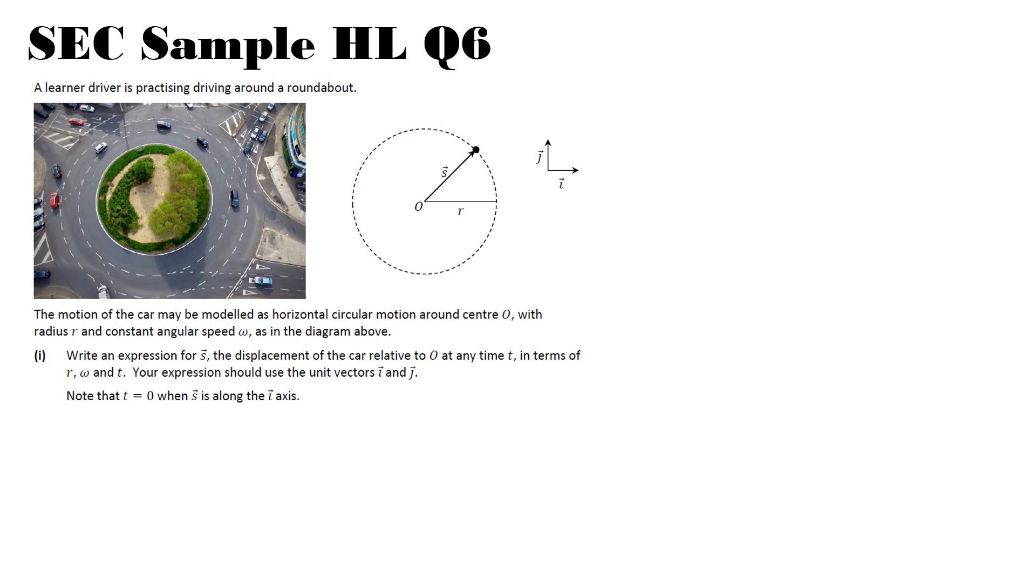Note that T equals 0 when S is along the i-axis. So this feels like a very complicated question, but actually what they're asking is relatively straightforward. If we look at the diagram, they're basically asking write this point in terms of i and j. That's literally all they're asking, this point in terms of i and j.